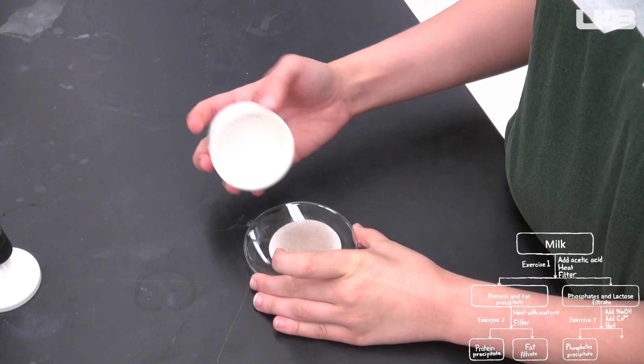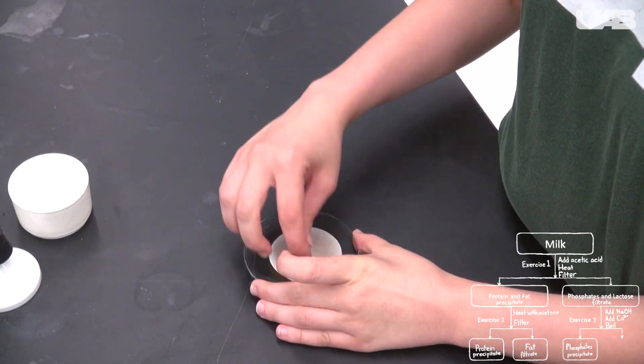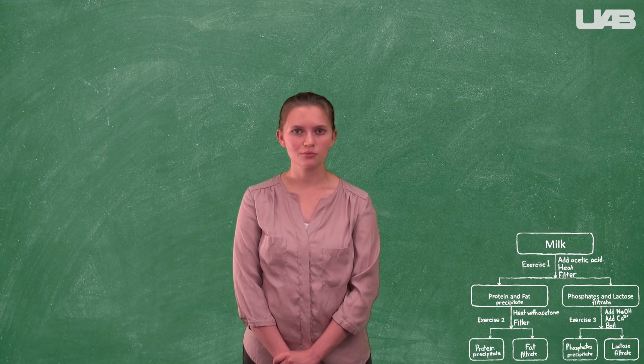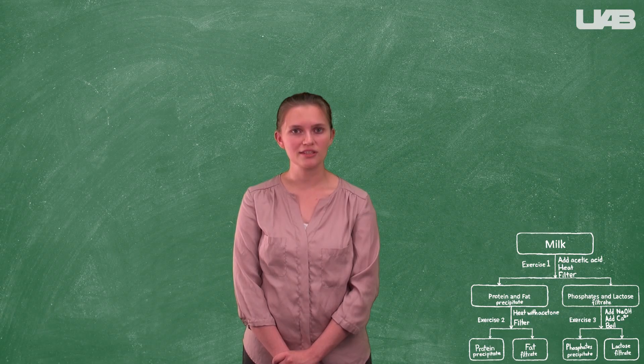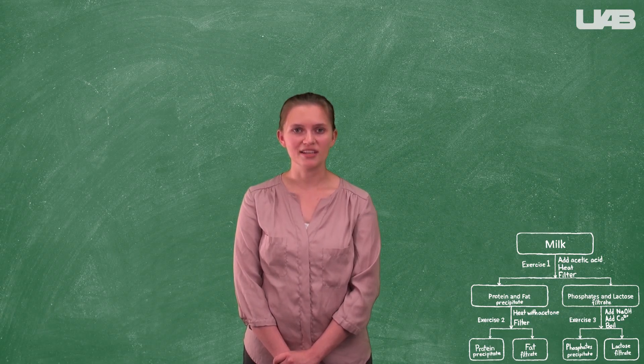Use the Buchner funnel again to filter out the calcium phosphate precipitate. Once the solid is dry enough to be easily removed, empty it onto a watch glass. Pour the filtrate, which contains the lactose, into a beaker and get ready to perform the Benedict's test.